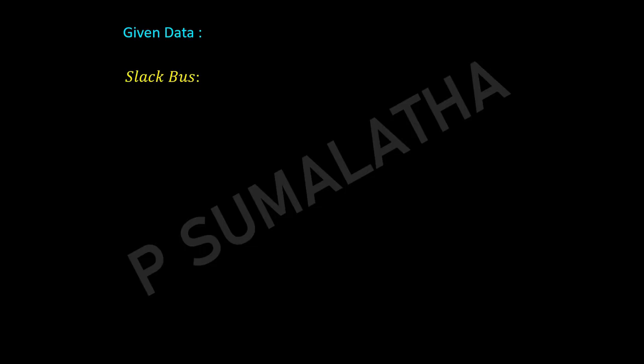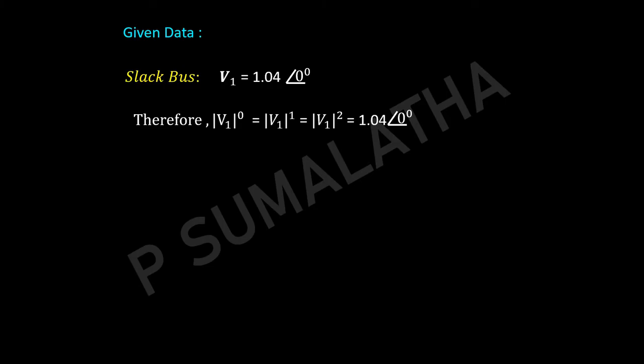Now let us see the given data — what is given and what we have to assume. For the slack bus, voltage is given as 1.04∠0°. The slack bus voltage magnitude remains 1.04 and phase angle 0 degrees for all iterations — it will retain the same value regardless of how many iterations are performed.